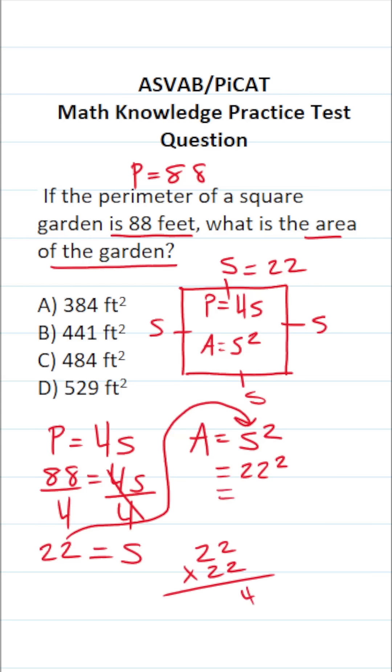2 times 2 is 4. 2 times 2 is 4. Add a 0 placeholder before we start multiplication with that 2. 2 times 2 is 4. 2 times 2 is 4. Let's add this all up. This is 484.